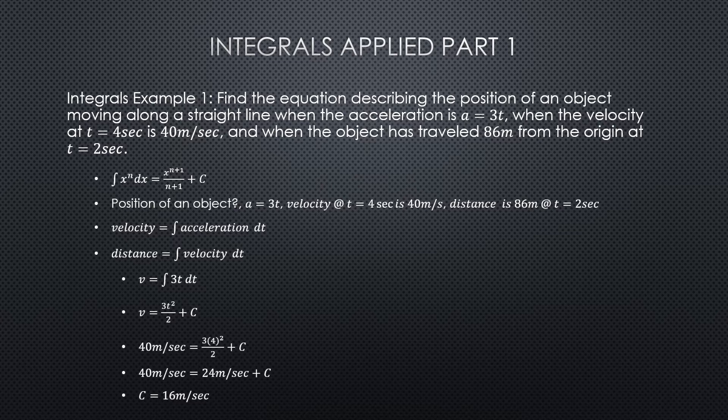Distance is 86 meters at 2 seconds. We need to know that velocity is equal to the integral of acceleration, and distance is equal to the integral of velocity. We have an acceleration, so we take the integral of that to find our velocity. We were given a specific velocity at time equals 4 seconds, so we put that into the equation and solve for C of the velocity formula. We find that C is equal to 16 meters per second.